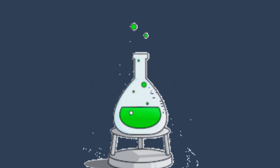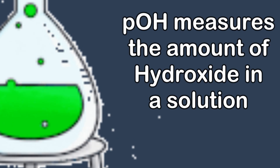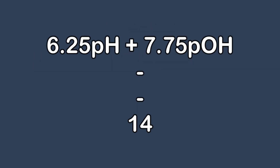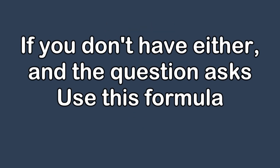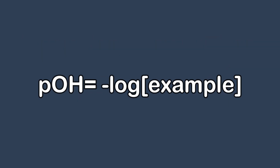Now we look at pH and pOH. pH measures the amount of hydrogen ions in a solution, and pOH measures the amount of hydroxide ions in a solution. In total, pH plus pOH will always equate to 14, so if you know one, you will always know the other. If you want to find the pH of something, use this formula — it's the same for pOH.